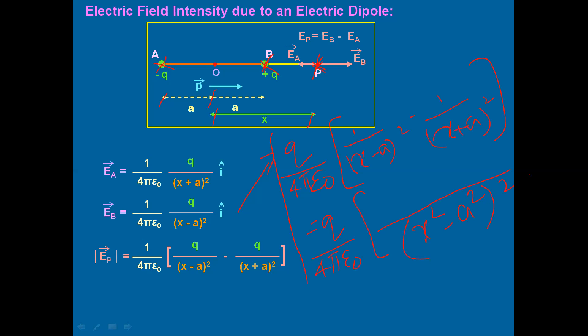Now, (x+a)² − (x−a)² equals 4ax using the identity (a+b)² − (a−b)² = 4ab. We can split 4ax as 2 × 2a × x. So the numerator becomes 2 × 2a × x, which allows us to group Q × 2a together.